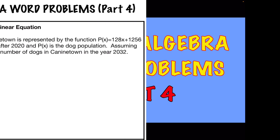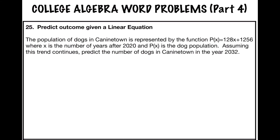Problem number 25 asks you to predict an outcome given a linear equation. It says the population of dogs in Canine Town is represented by the function p(x) = 128x + 1256, where x is the number of years after 2020 and p(x) is the dog population. Assuming this trend continues, predict the number of dogs in Canine Town in the year 2032.